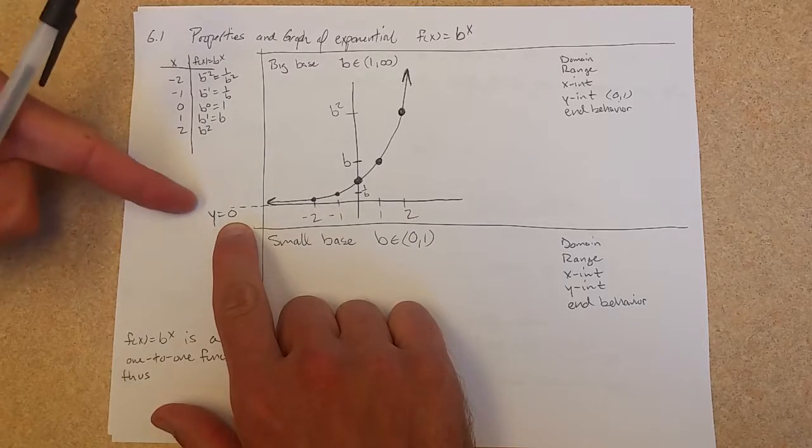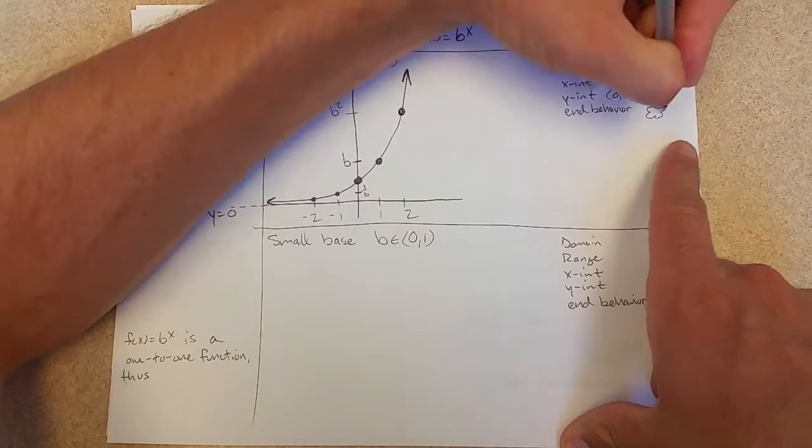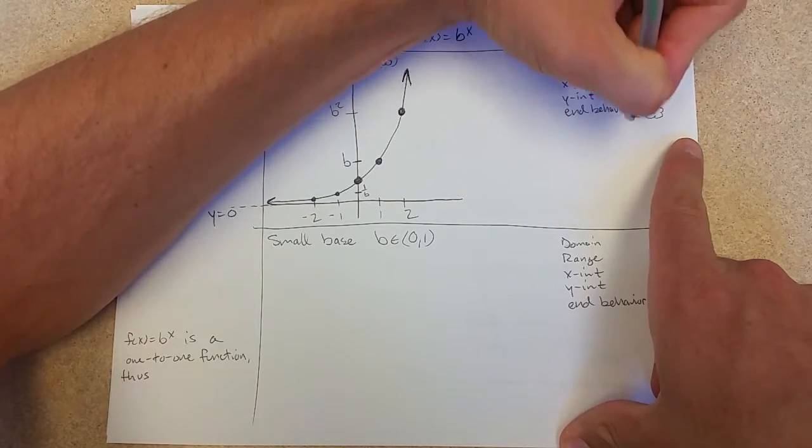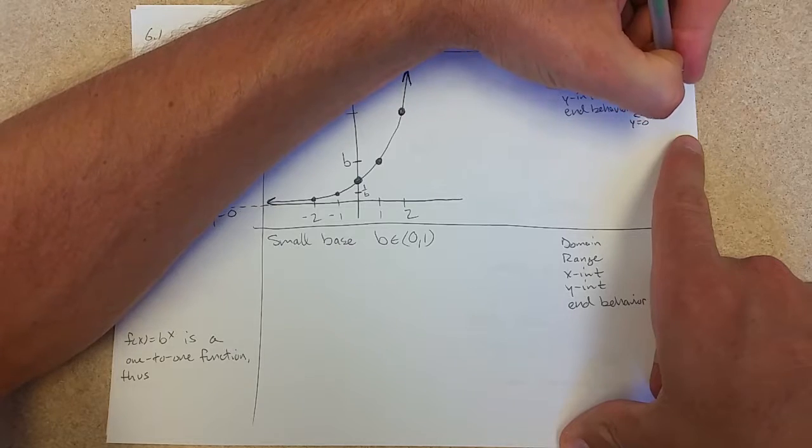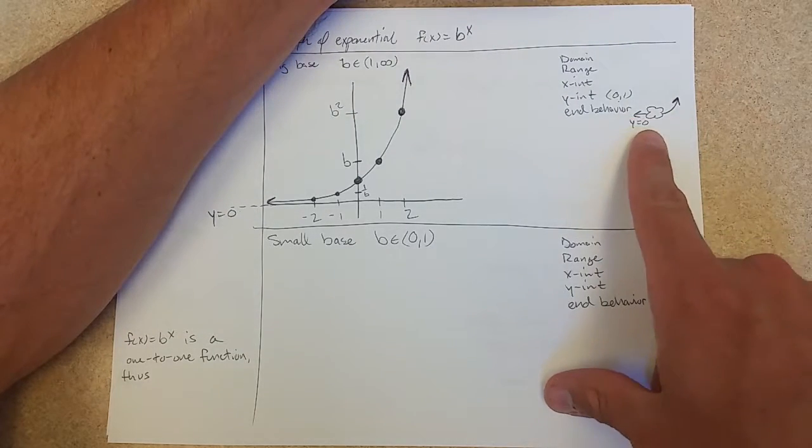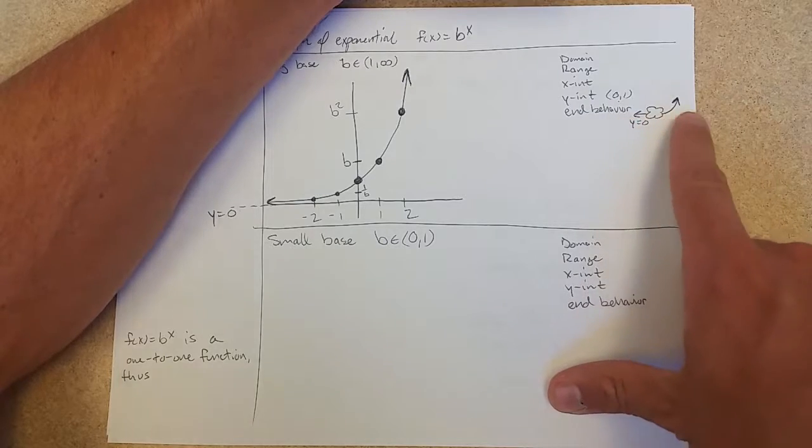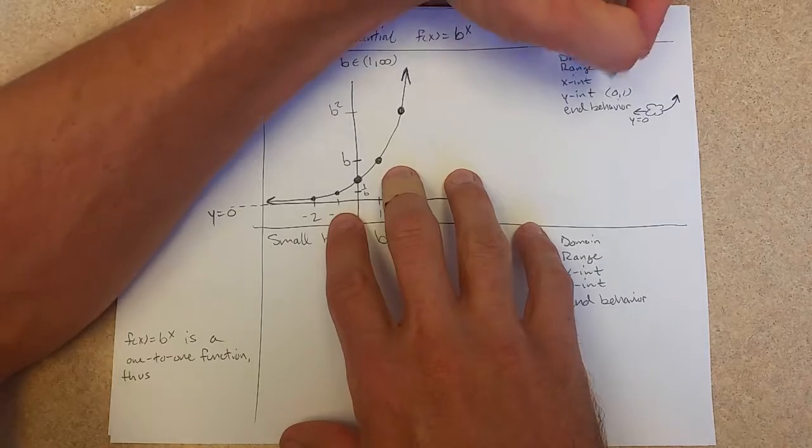So we're going to get a horizontal y equals 0 asymptote. Horizontal asymptote here, that will be end behavior. So let's draw that in while we're on it. On the left side, we get y equals 0. Now on the right side, this function is not like any of the other ones we've seen before. You've got y equals 0 on the left, and it goes up on the right. We've got no x-intercepts.